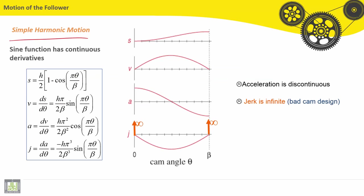For simple harmonic motion, sine function has continuous derivatives. If we take the position function and perform all derivations—first derivative, second derivative, and third derivative...